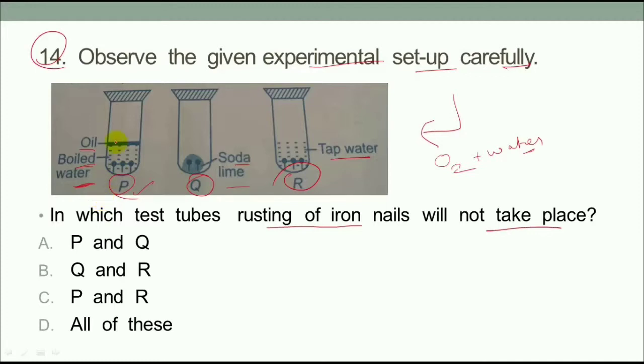This thin layer will prevent it from rust. If you talk about Q, in test tube Q there will not be rust because soda lime has absorbed water vapor. If you talk about R, it will rust because water and oxygen are available.